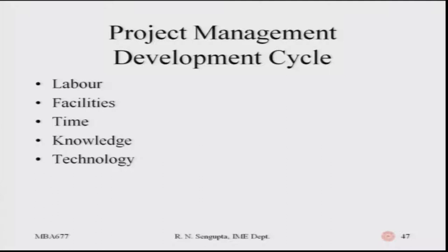The project management development cycle, as you can see in the slide, consists of labor, facilities, time, knowledge, and technology. Labor can be related to manpower, technical information, different types of machinery and equipment. Facilities can be a building or a research lab — those are part of the facilities component.